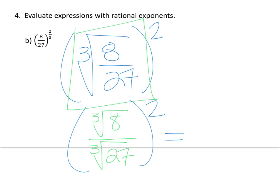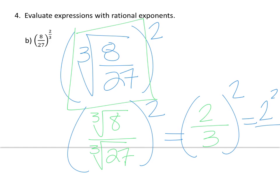The third root of 8 is 2, and the third root of 27 is 3, all of it squared. Now we're going to square the top and bottom — so we have 2 squared over 3 squared, which gives us a final answer of 4 over 9.